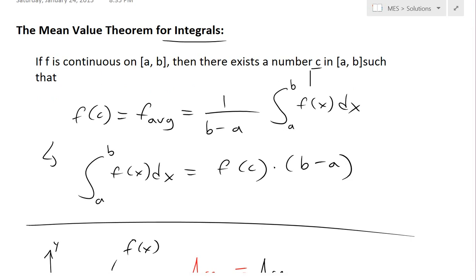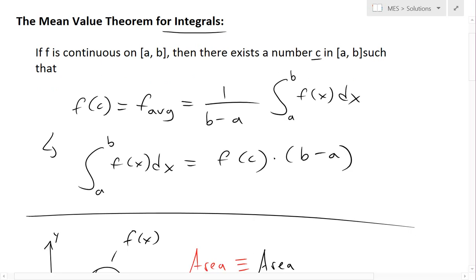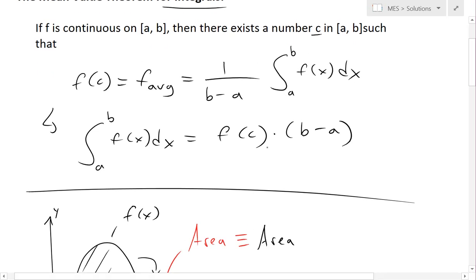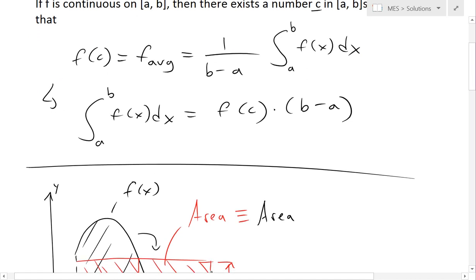You can see proof of that in the video link below. In other ways, you could write it as: the integral from a to b of f(x) dx equals f(c) times (b minus a).